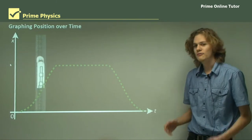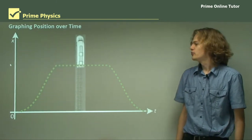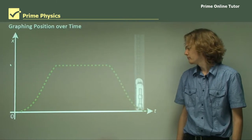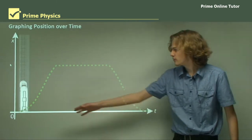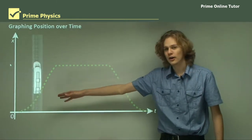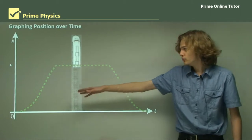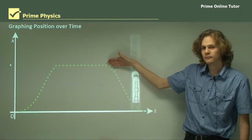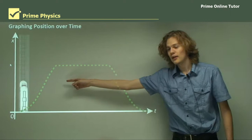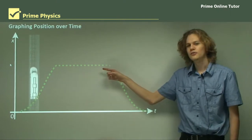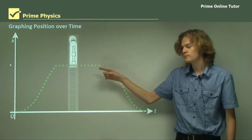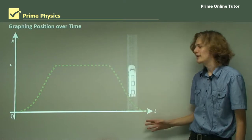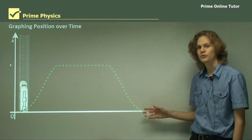Here we have an animation of a train's position being graphed over time. We can see that at the very start of the graph, the train is right at the bottom of the tracks. It moves up, and at this point it stops moving. So the graph is flat, and the train's position doesn't change over time. Then it moves backwards, and we can see that the graph moves back downward as the train moves back along the track.